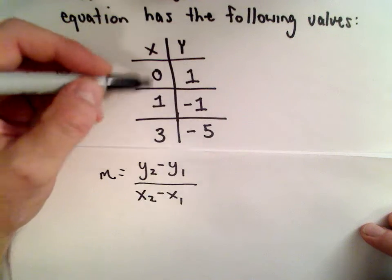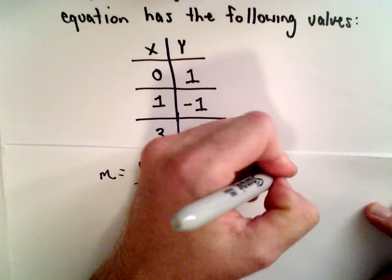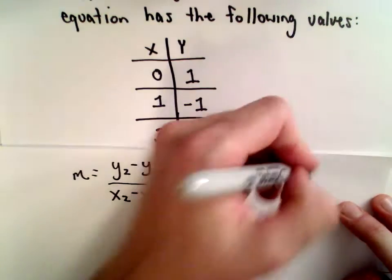Notice we've actually been given three points here. We've got the point (0, 1). We've got the point (1, negative 1). And then we also have the point (3, negative 5).